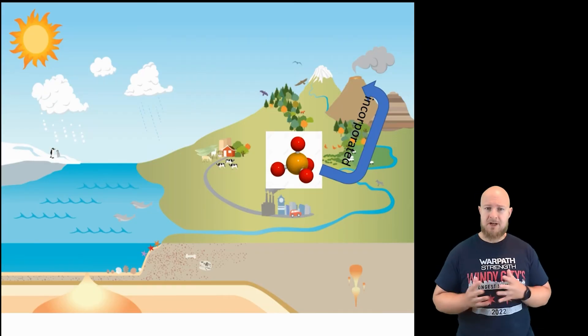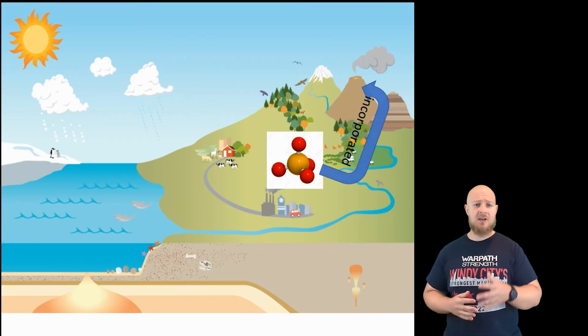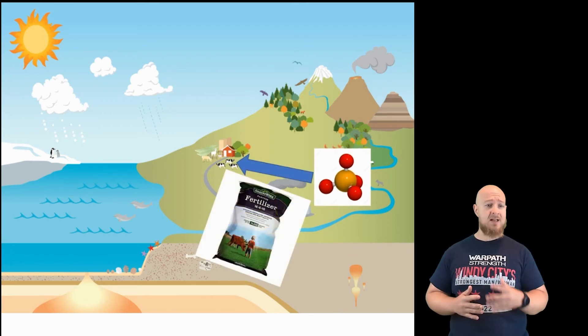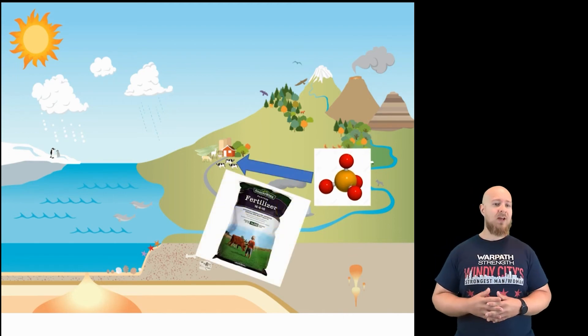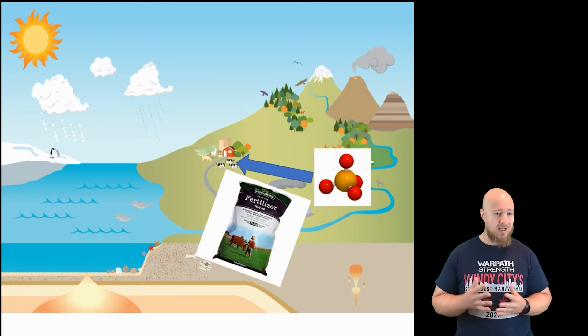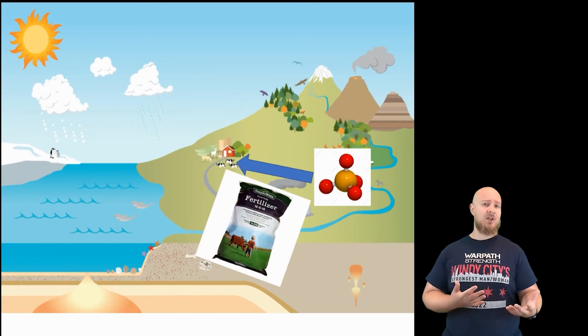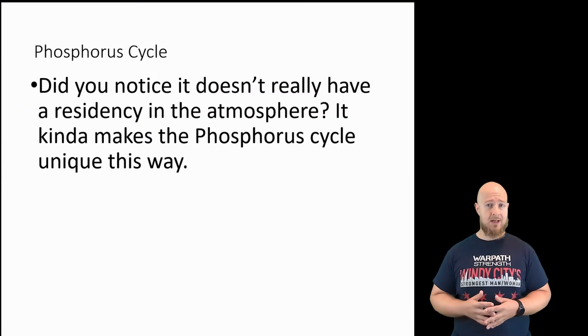Humans have affected the phosphorus cycle as well. Because it is a limiting resource in many ecosystems, and it is necessary for plant growth, we have been adding it to our fertilizers, and again, artificially increasing the amount of phosphorus that is being assimilated by plants.